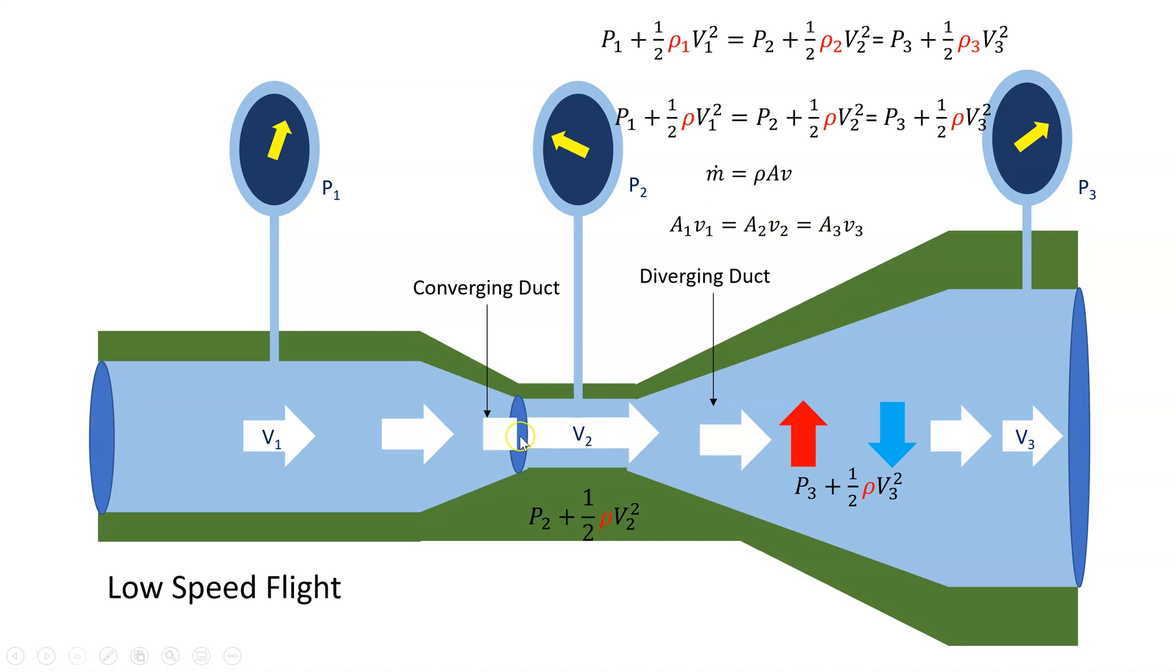If I look at the diverging duct here, as the air comes through area 2, it has a large velocity V2. But when it comes through area 3, the area is much larger. So if I'm going to keep this constant, if this is increased, then this must decrease. So the velocity decreases. You can see that, the large velocity here and the small velocity here.